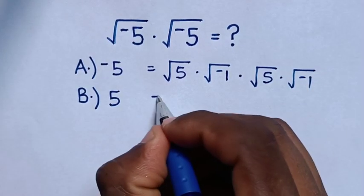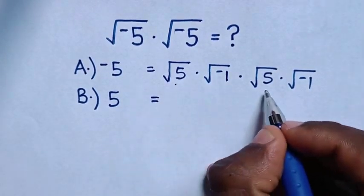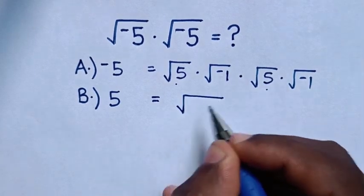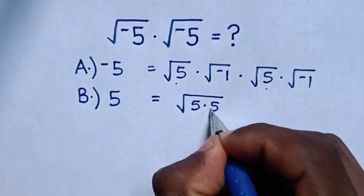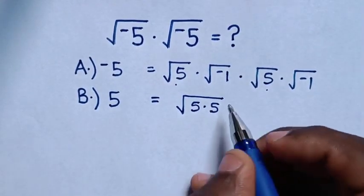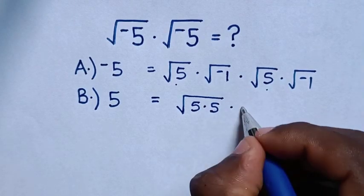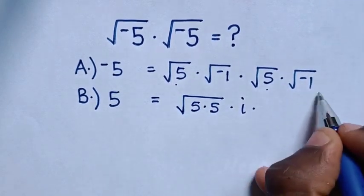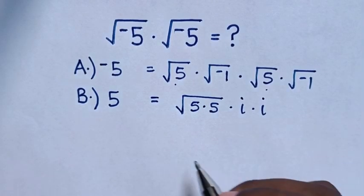Then it will be equal to square root of 5 times square root of 5 is square root of 5 times 5. Then times square root of negative 1 is i times square root of negative 1 is i.